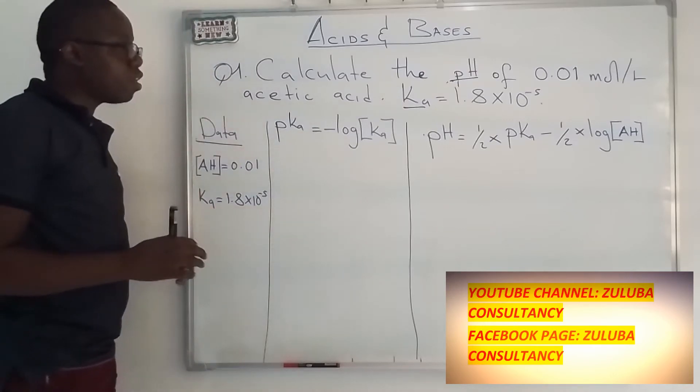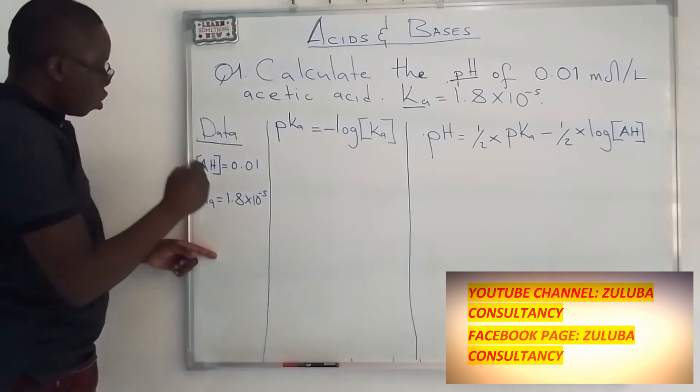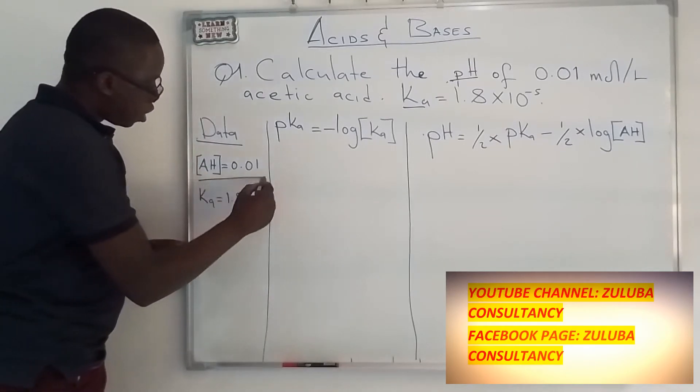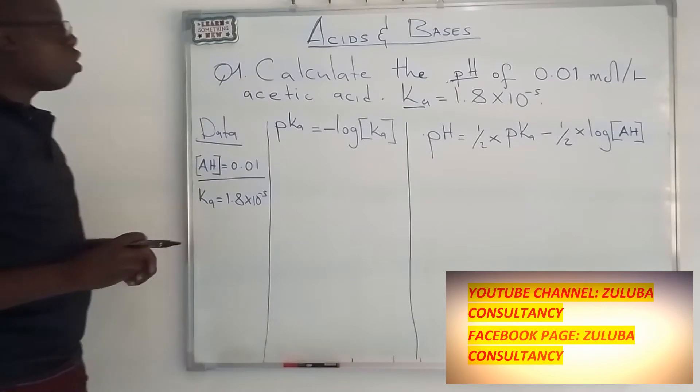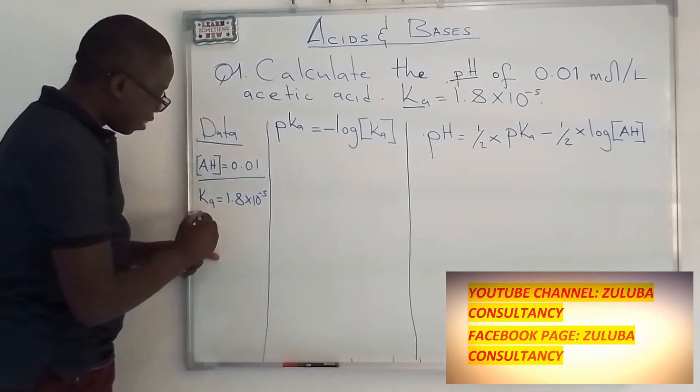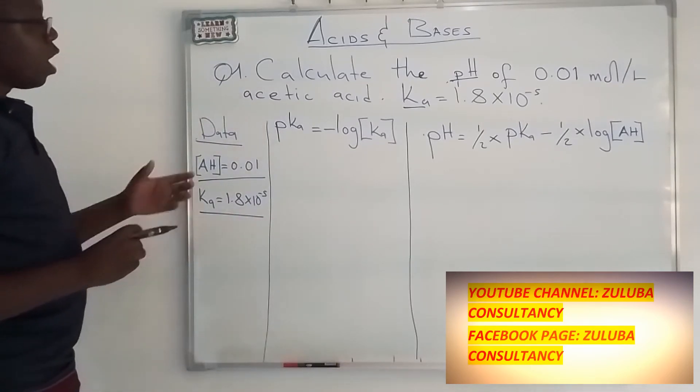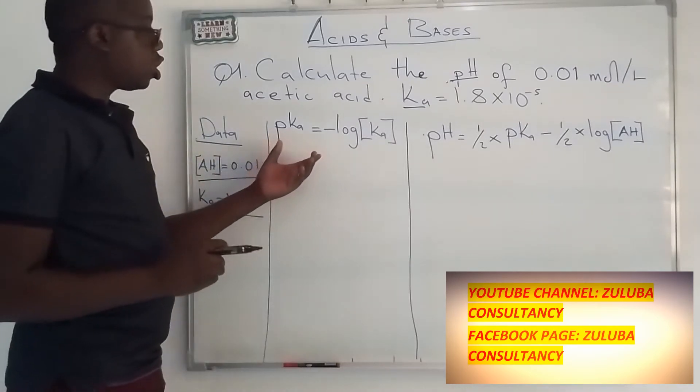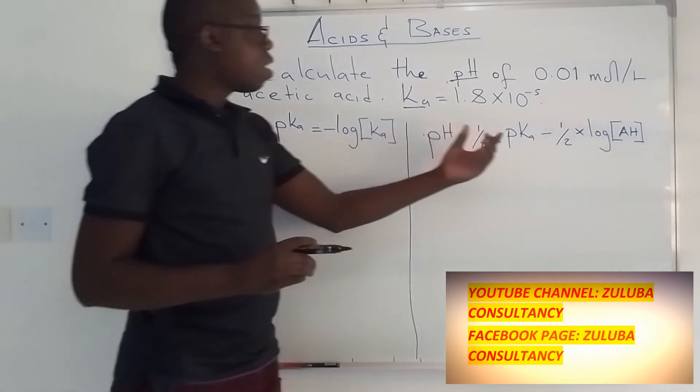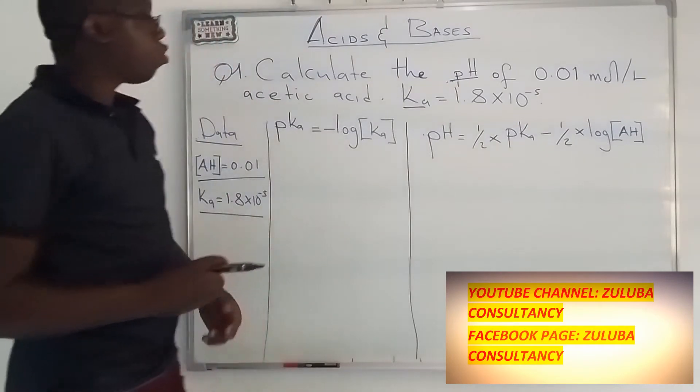So when you have this question, we need to get this information. So the first information is the concentration of this weak acid. Then we also get the Ka value there. Now there is a relationship between pH, Ka, and the concentration.